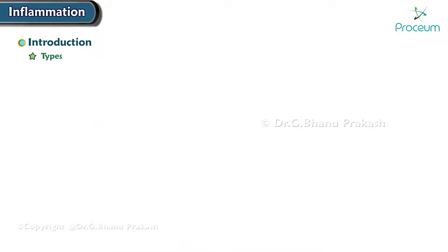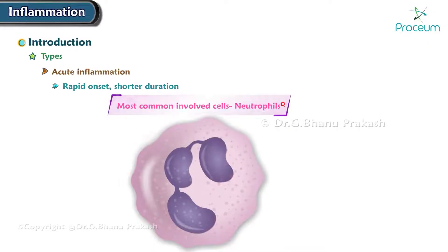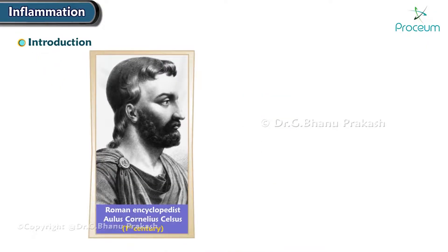There are two main types of inflammation. First is acute inflammation. This type is rapid in onset and of shorter duration. The most commonly involved cells with acute inflammation are neutrophils.